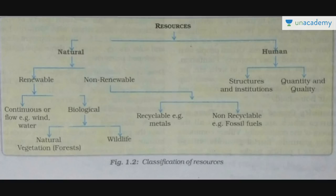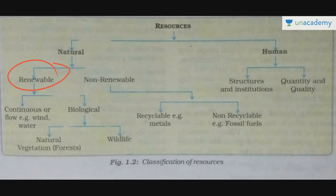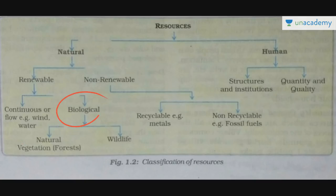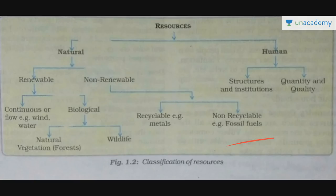There is one chart given in your book which you should refer to. It classifies resources into natural and human. Natural resources have renewable and non-renewable types. Renewable resources include continuous flow resources like wind and water, and biological ones like natural vegetation or wildlife. Non-renewable includes recyclable metals or non-recyclable fossil fuels. Human resources include structures, institutions, and aspects of quantity and quality.